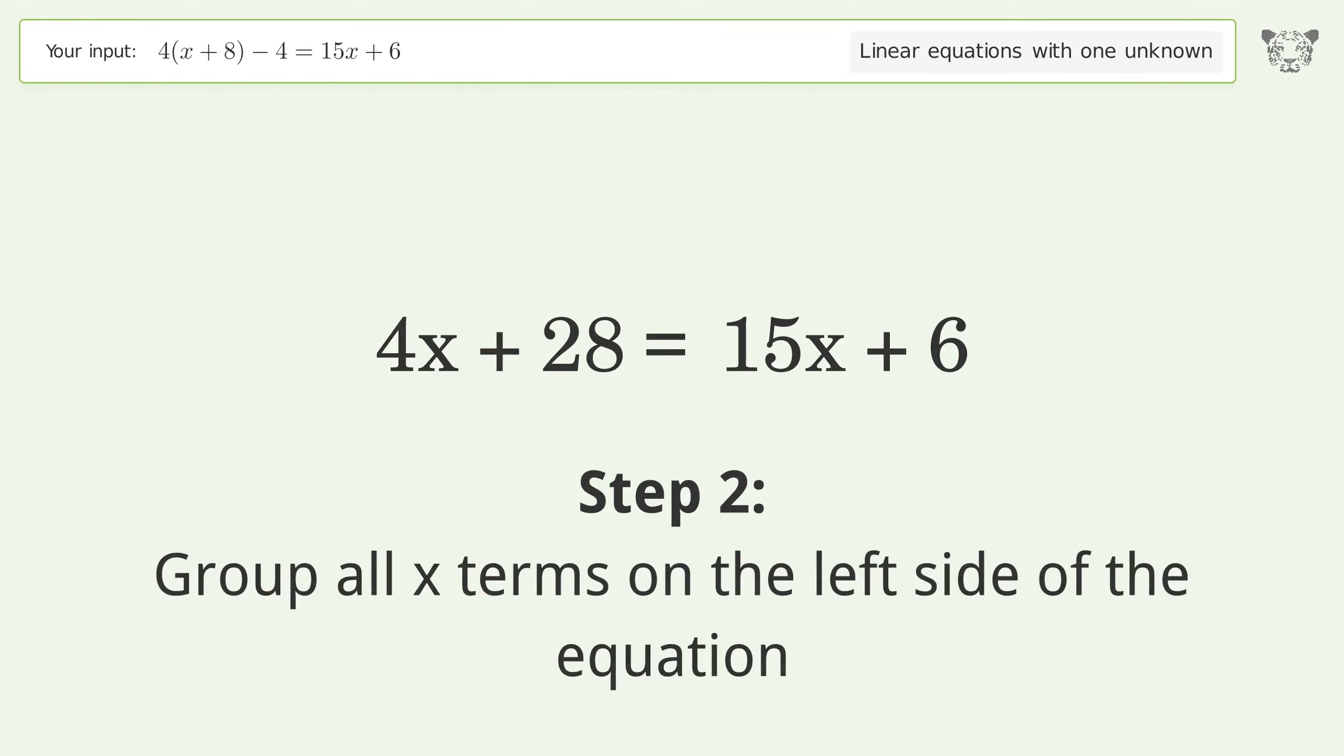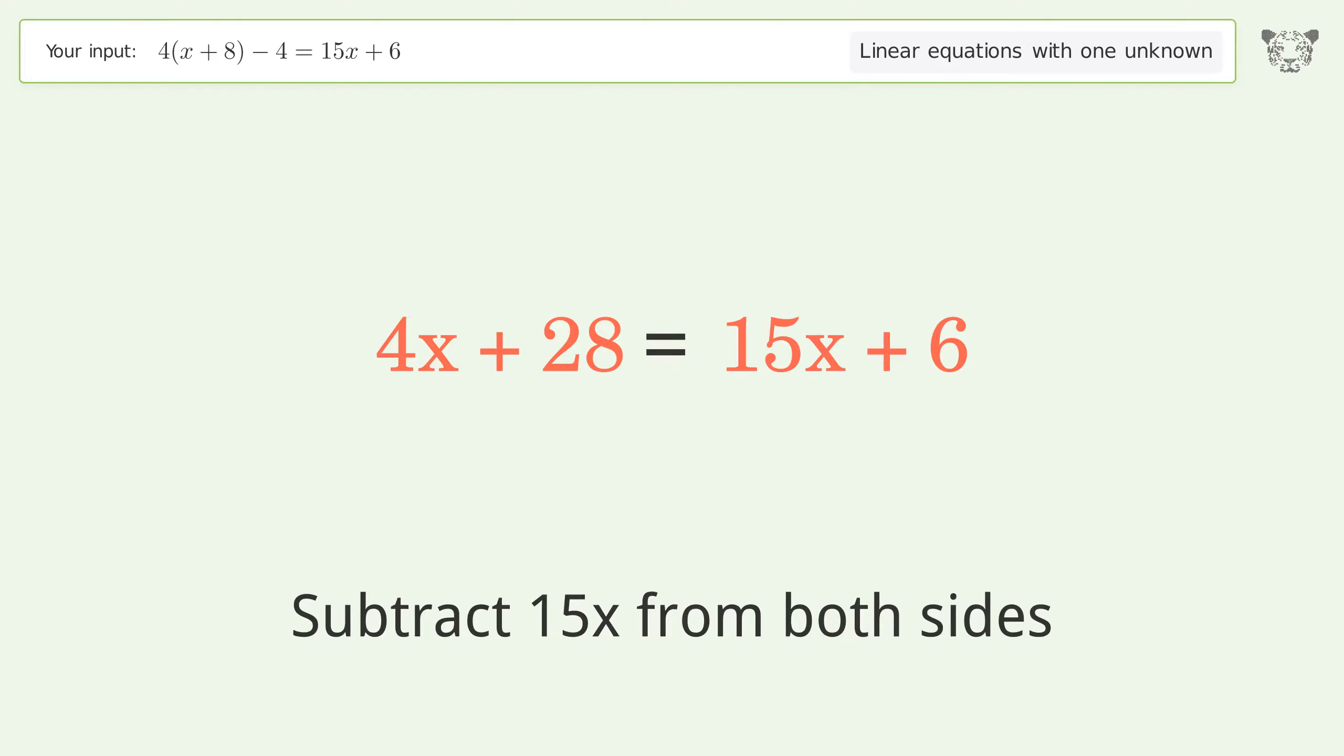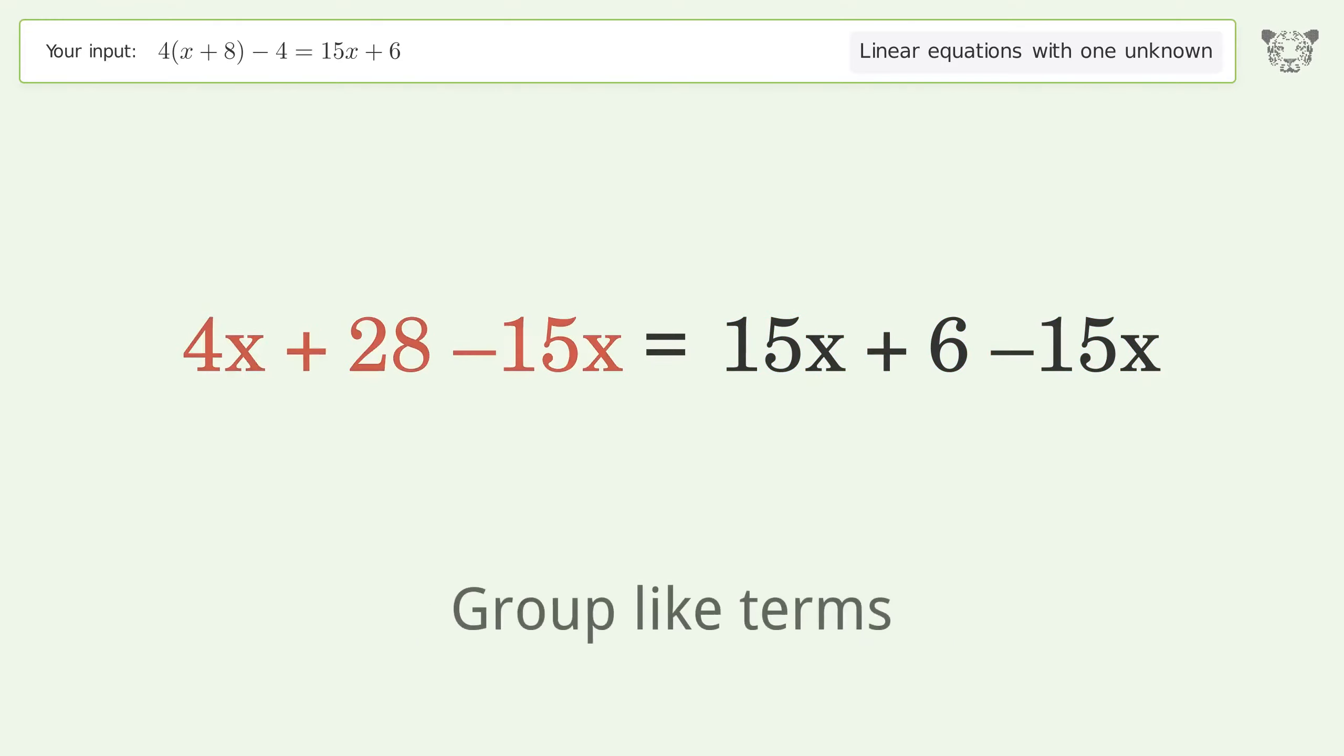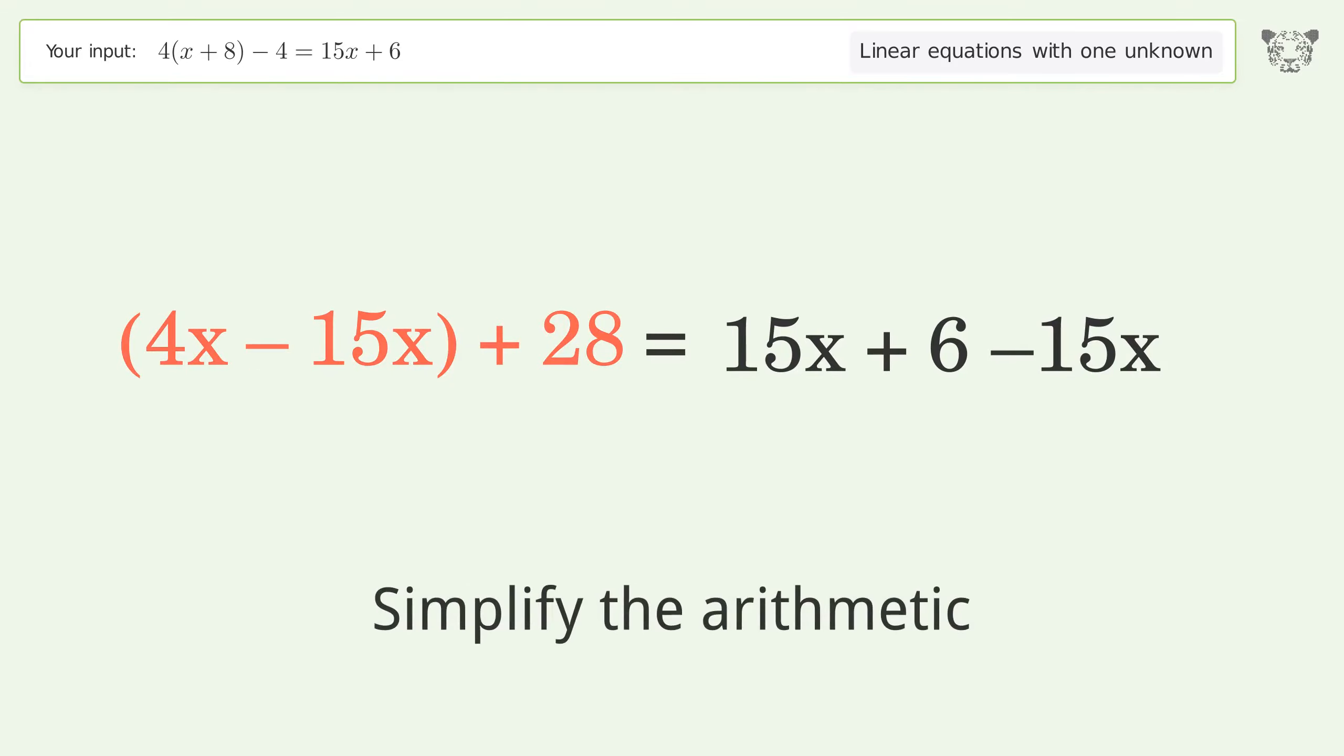Group all x terms on the left side of the equation. Subtract 15x from both sides, then group like terms and simplify the arithmetic.